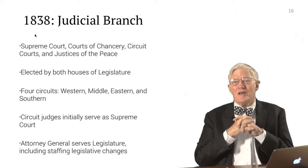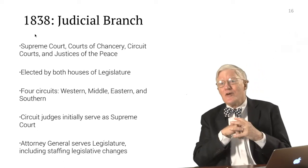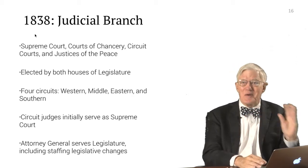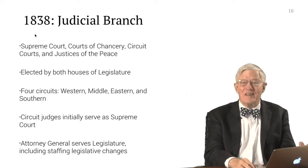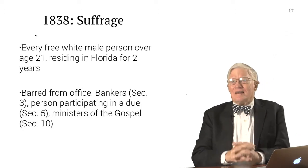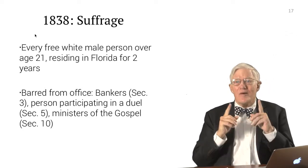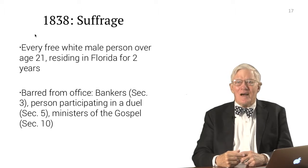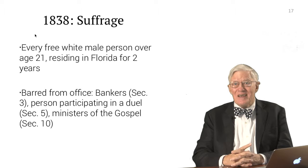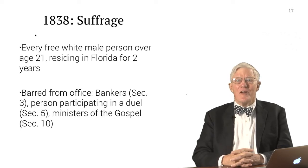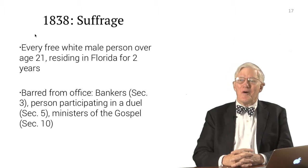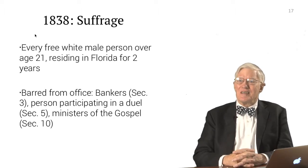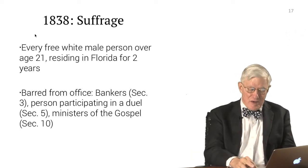There were four circuits: western, middle, eastern, and southern. The circuit judges initially served as Supreme Court justices. The attorney general was not an officer of the executive branch but an officer of the legislative branch — all the power was focused in the legislature. Suffrage was every free white male over age 21 residing in Florida for at least two years. Barred from office were bankers, people who had participated in a duel, and ministers of the gospel.